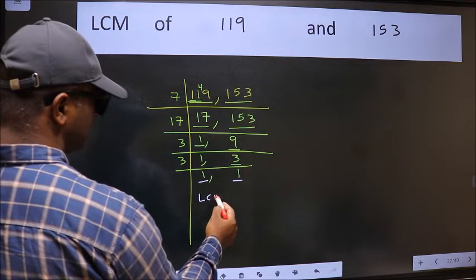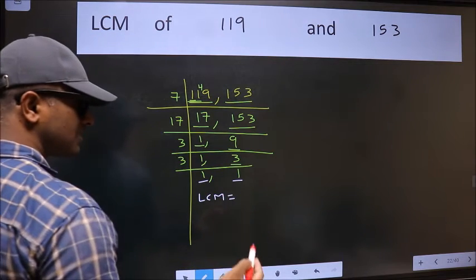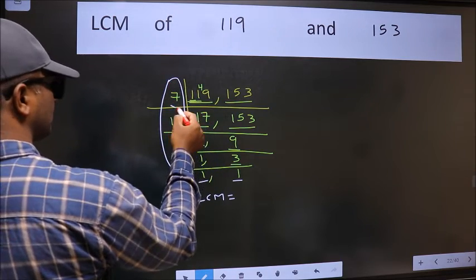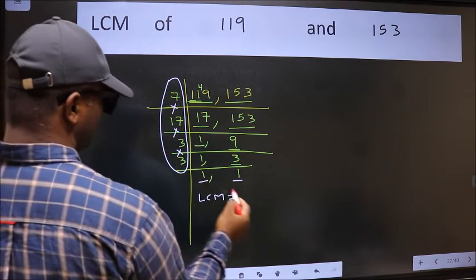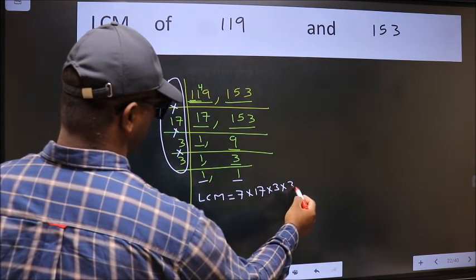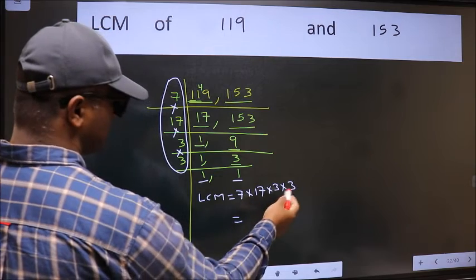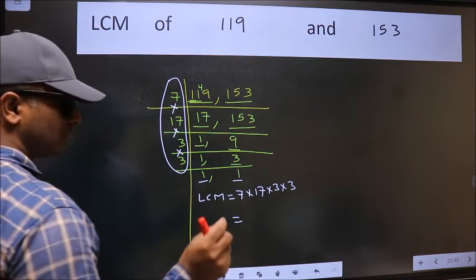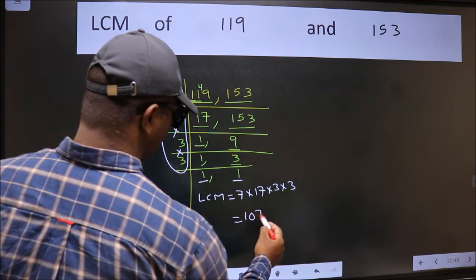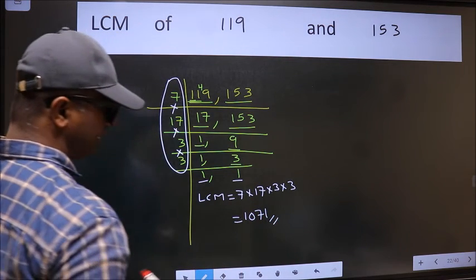So our LCM is the product of these numbers, that is 7 times 17 times 3 times 3. When we multiply these numbers we get 1071 is our LCM.